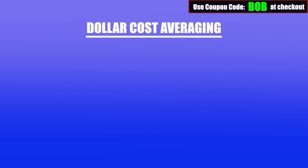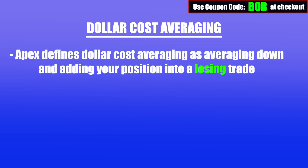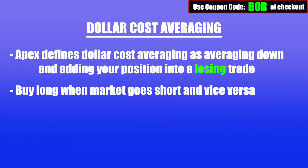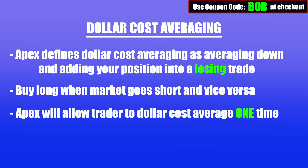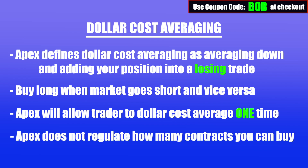Let's talk about dollar cost averaging. Dollar cost averaging is basically adding into a losing trade in order to improve your initial entry price — so it's adding into a negative P&L. For example, if you're going long and the market goes short, you keep buying more long positions to lower your entry price. Vice versa, if you're going short and the market goes long, you keep adding into your short position to better your entry price. Apex prohibits this practice with the exception of doing it one time — you can add into a negative P&L just once after your initial entry, but no more. There are no rules for the number of contracts you can buy for that additional entry, but obviously be smart with your risk management.